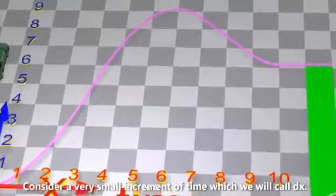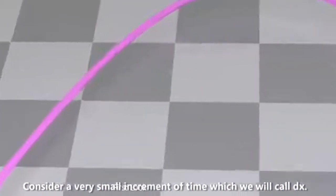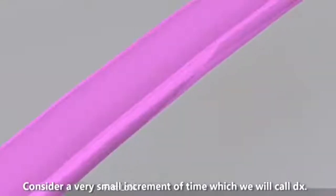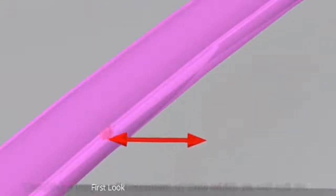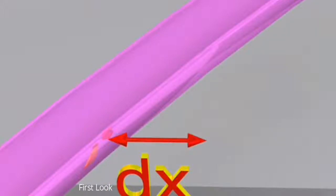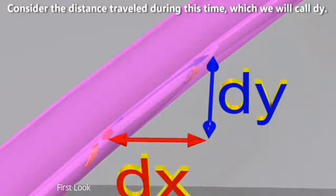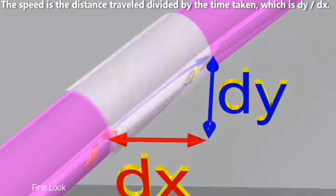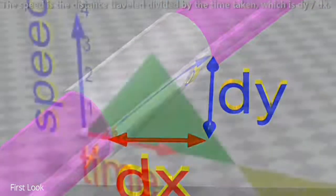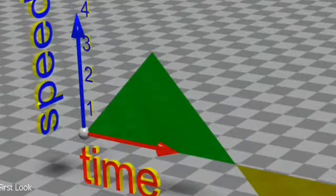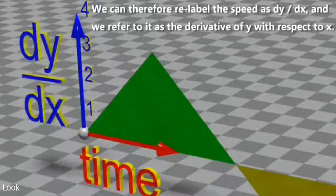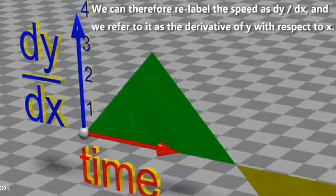Consider a very small increment of time, which we will call dx. Consider the distance traveled during this time, which we will call dy. The speed is the distance traveled divided by the time taken, which is dy divided by dx. We can therefore relabel the speed as dy divided by dx, and we refer to it as the derivative of y with respect to x.